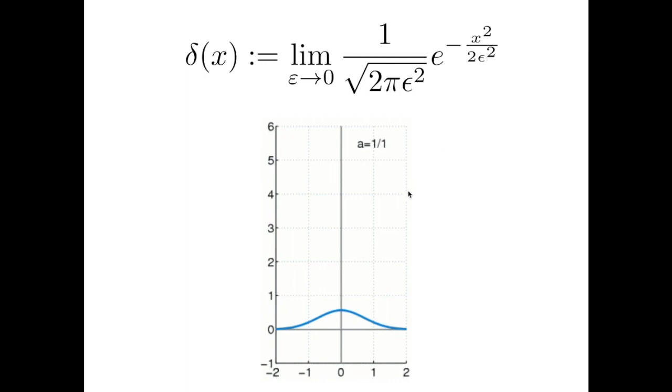As you make the variance getting smaller and smaller, the peak amplitude of this bell-shaped function is increasing, and at some point it will reach an infinite value. You see from this animation that this is also approximating a Dirac delta function everywhere else zero with the exception of the origin, the point where x equals zero, where the function takes infinite values.